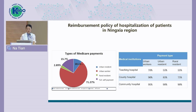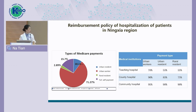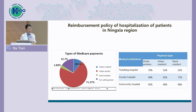In general, the reimbursement in Ningxia is set as three types: urban workers, urban residents, and rural residents. About 71% of the patients are urban workers, about 13% are rural or urban residents, and the remaining 15% are full self-payment because they come from other provinces and are not residents of Ningxia.